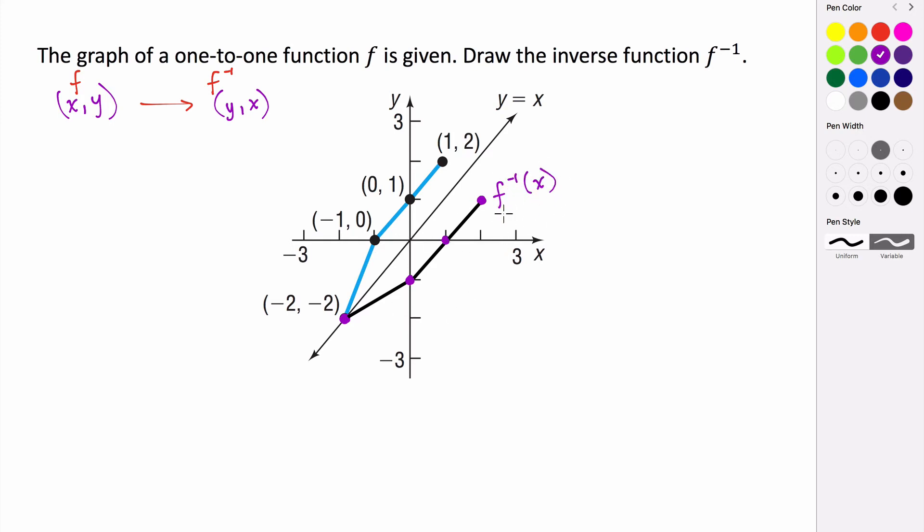So this is the f inverse of x. Interestingly enough, f inverse and f are reflected about the line y equals x. That's actually true for all inverse functions. You can see that here, right? We take x and replace it with y, we take y and replace it with x. So that follows that if y equals x, this should be true. Our function is just going to be a reflection of its inverse about the line y equals x.